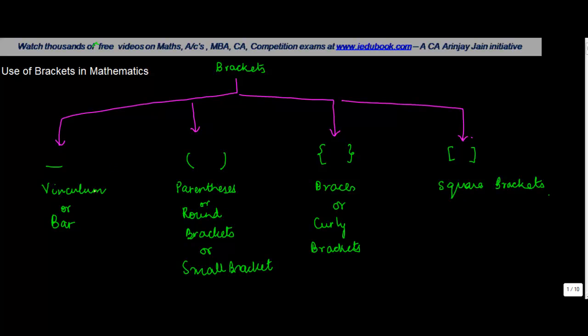This will be something like this. Let's say for example you have four into six divided by three minus two. Now what does this mean? This means that there is a vinculum standing out here and then there's a parenthesis. So in order to solve this, what you will do is first you solve this bracket.